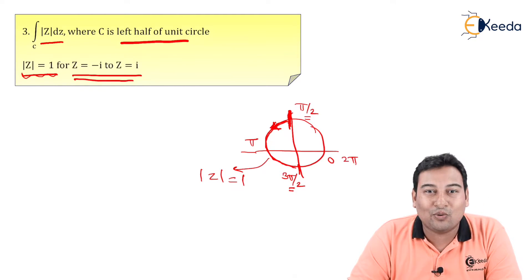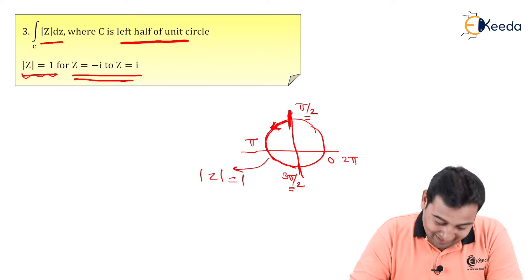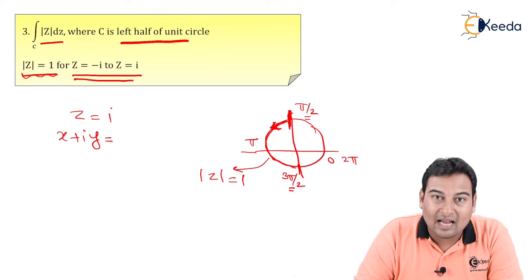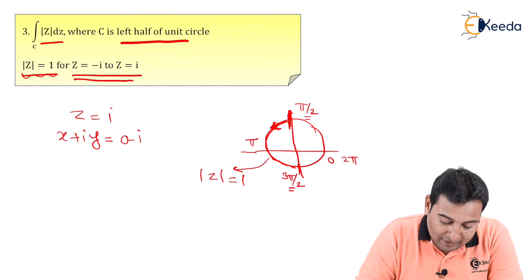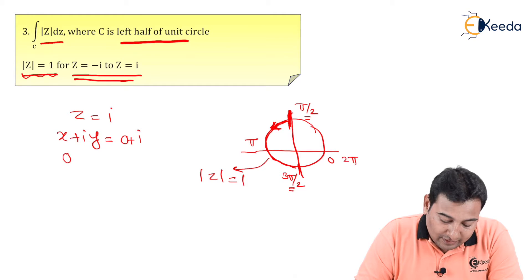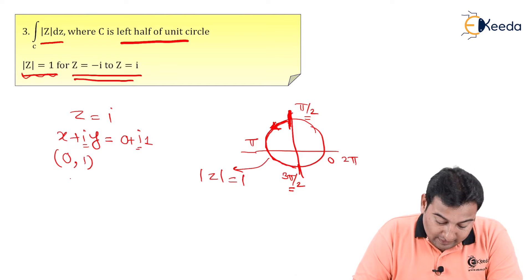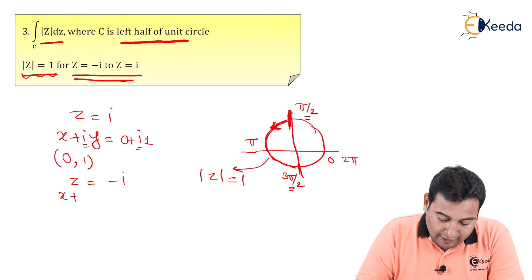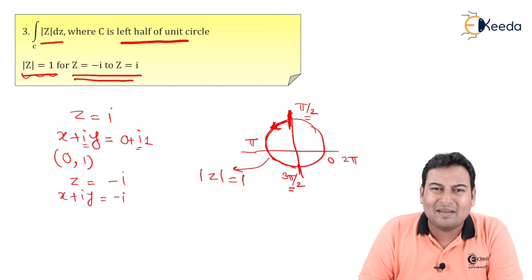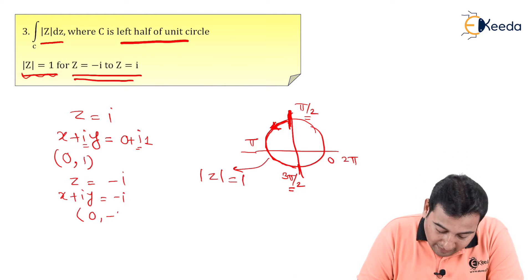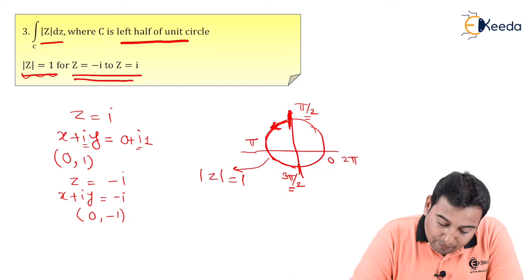The path goes from z = -i to z = i. Let us identify what z = i and z = -i are. Since z = x + iy, z = i means x + iy = 0 + i, so x = 0 and y = 1. And z = -i means x + iy = -i, so there is no real part and the imaginary part is -1.